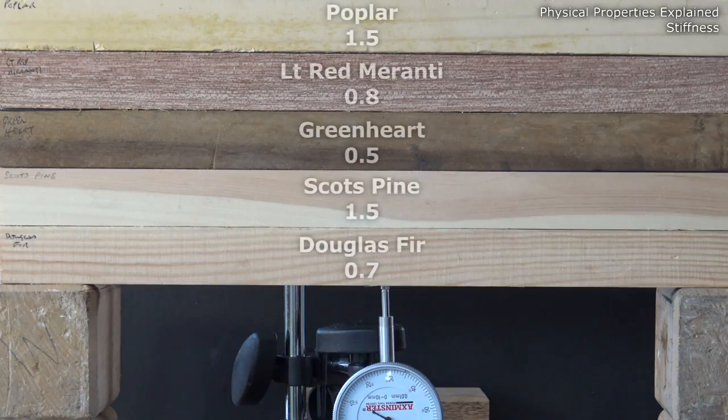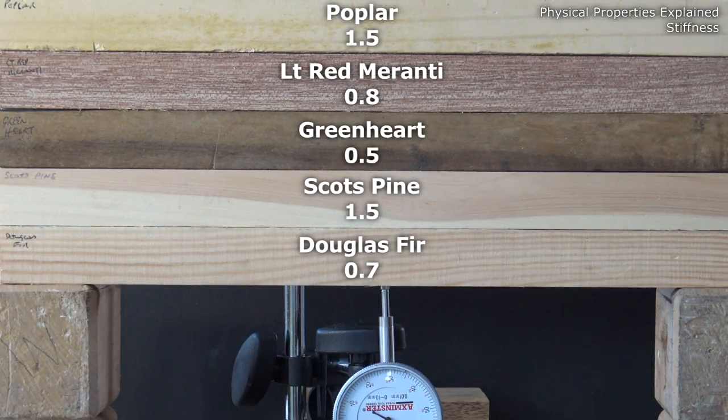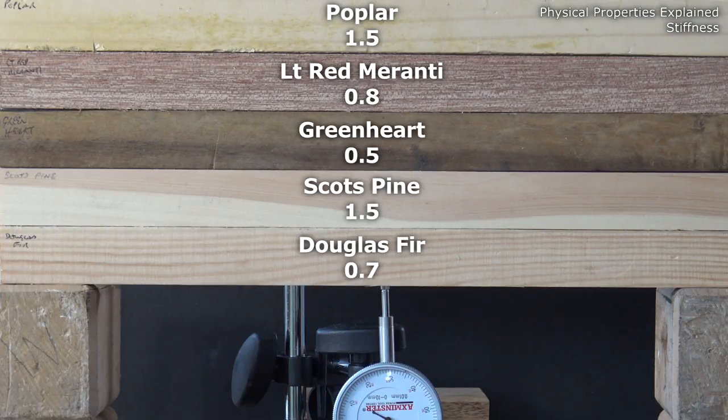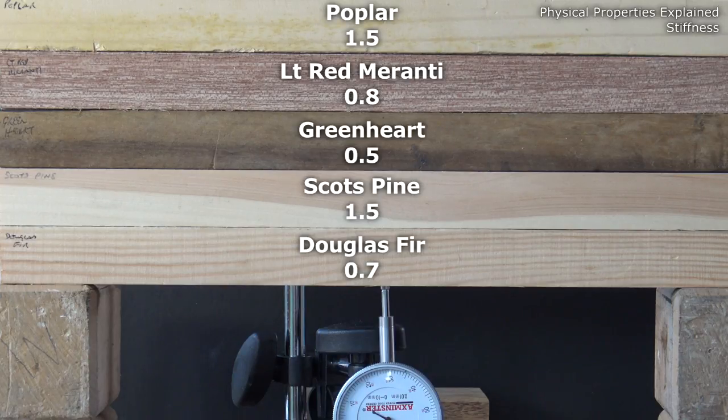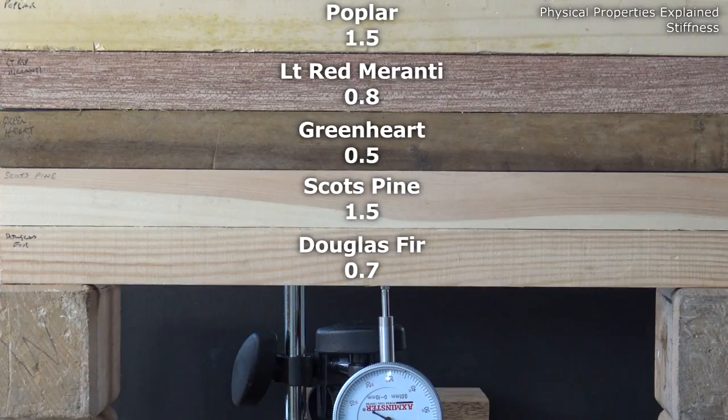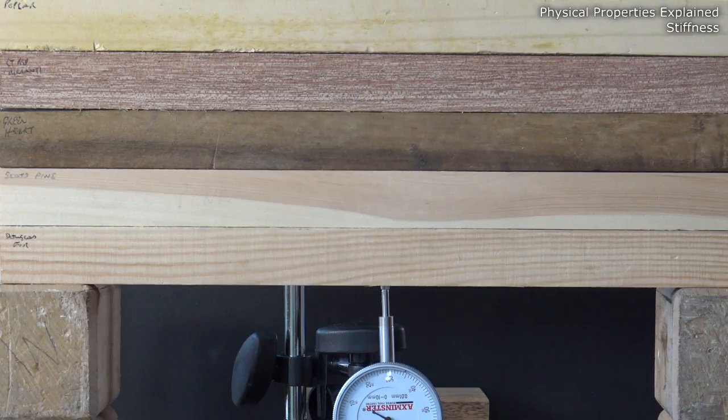So what exactly does all this tell us? Well we see there's a wide range of stiffnesses in these five samples, with Green Heart being the stiffest, and Scots pine and poplar being the least stiff. Different samples of the same species will give slightly different results, and so published figures are based on many many samples of the same species being averaged.